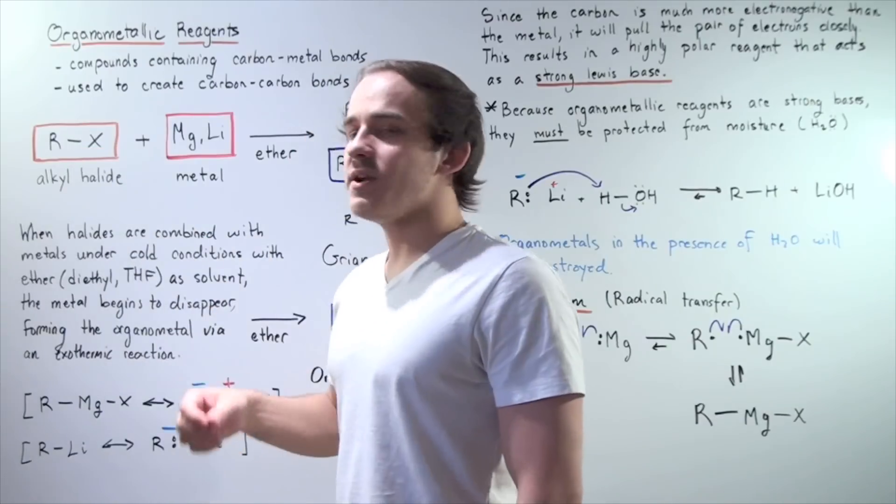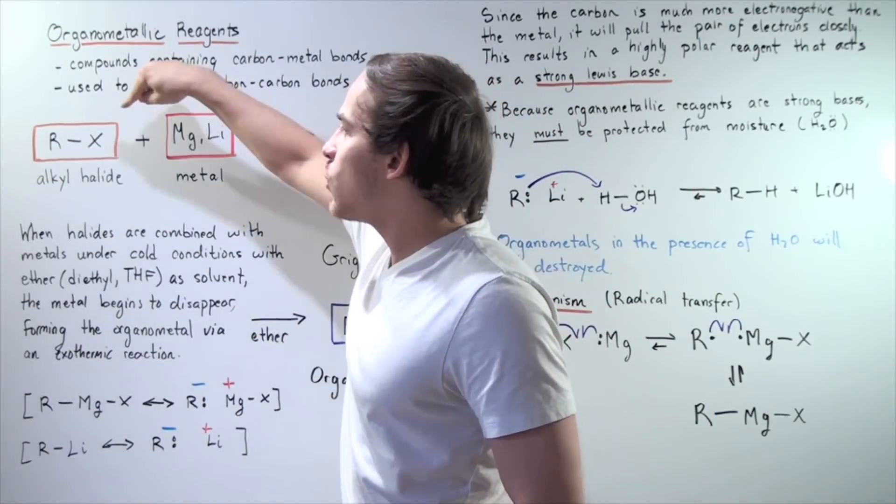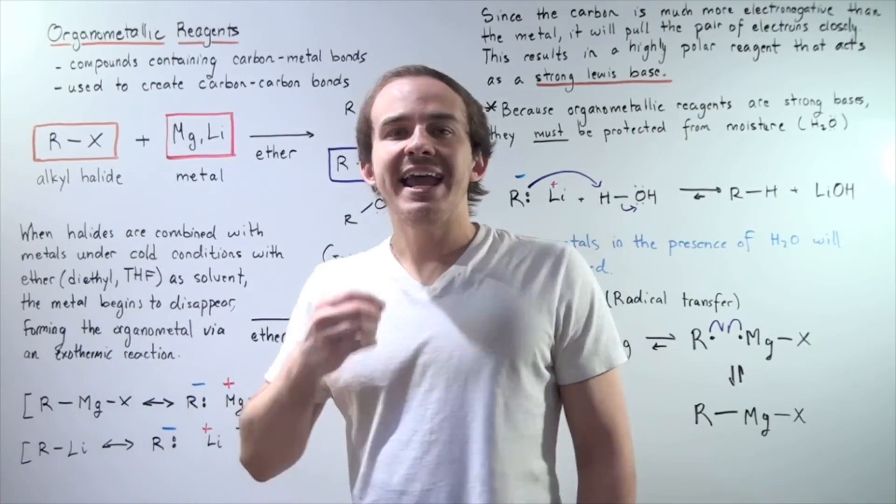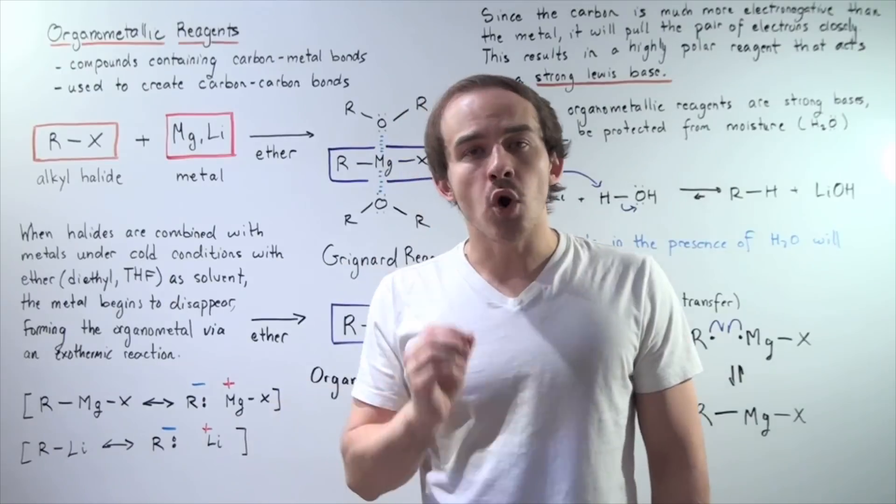Now, this R group is simply your hydrocarbon group. And that means the carbon is attached to our X, which is simply a halogen. Now, it's important for the X not to be fluorine.